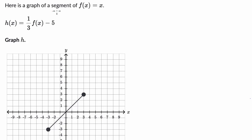We're told here is a graph of a segment of f of x equals x. And then h of x is equal to one third times f of x minus five. Graph h. Think about how you would approach this before we do this together.